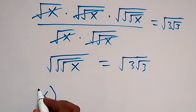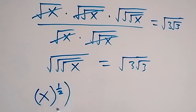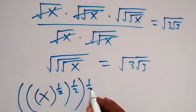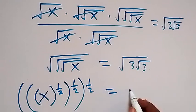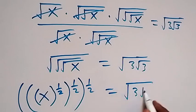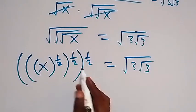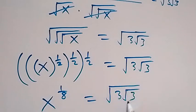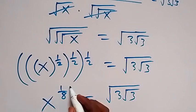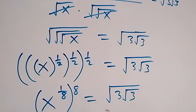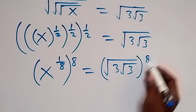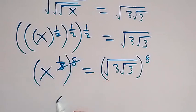We can write this as x raised to power one-half, then raised to power one-half, then raised to power one-half — three of them — because square root is raised to power half. This equals root 3 times root 3. Since powers multiply, we write this as x raised to power 1 over 8, which equals root 3 times root 3. Now let's raise both sides to power 8, and the powers cancel, leaving only x.